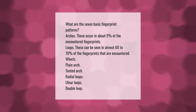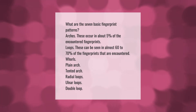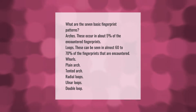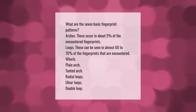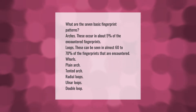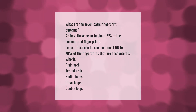What are the seven basic fingerprint patterns? Arches occur in about five percent of encountered fingerprints. Loops can be seen in almost 60 to 70 percent of fingerprints encountered. The seven patterns are: plain arch, tented arch, radial loops, ulnar loops, and double loop, along with whorls and loops.